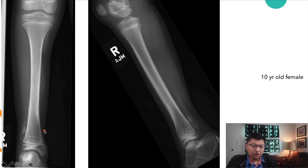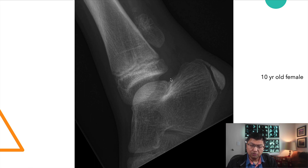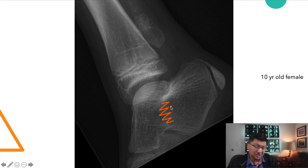Another known association is a ball-and-socket deformity at the ankle — here is the socket and here is the ball. Tarsal coalition is also a very common finding, present in approximately 50% of these kids, and is strongly associated with fibular hemimelia or fibular deficiencies.